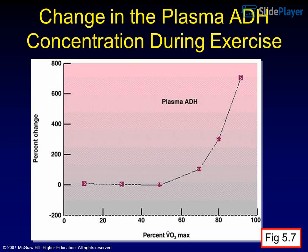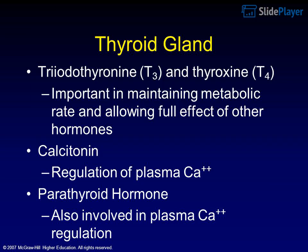The thyroid gland produces triiodothyronine (T3) and thyroxine (T4), which are important in maintaining metabolic rate and allowing the full effect of other hormones. Calcitonin regulates plasma Ca²⁺, and parathyroid hormone is also involved in plasma Ca²⁺ regulation.